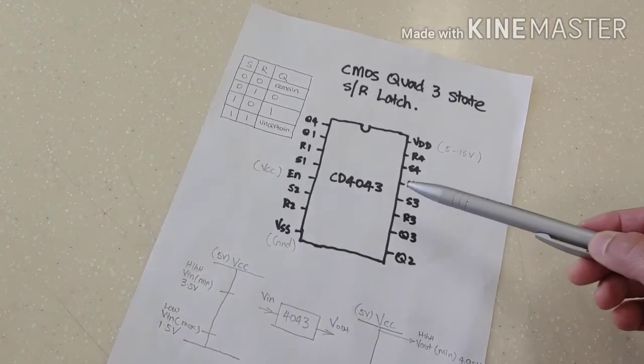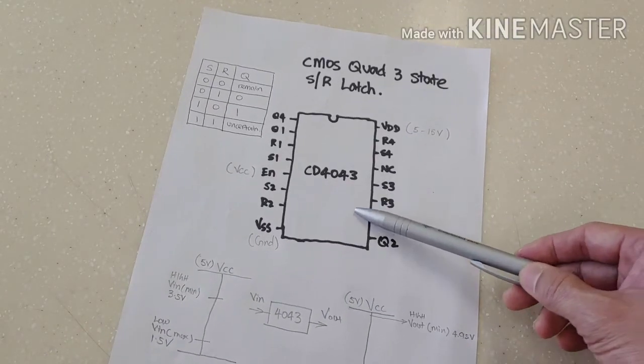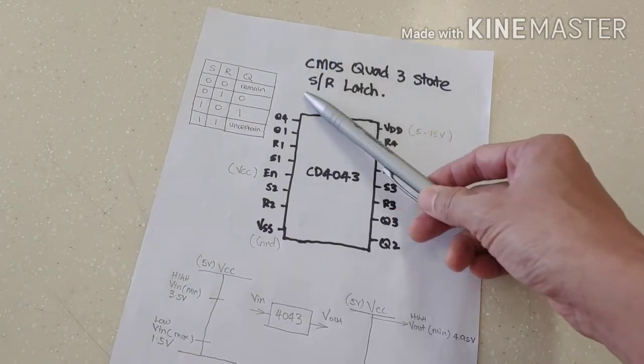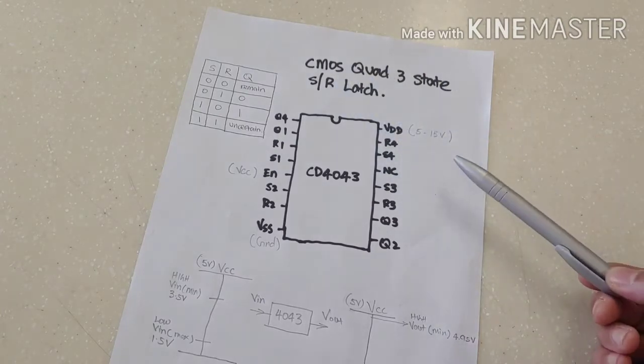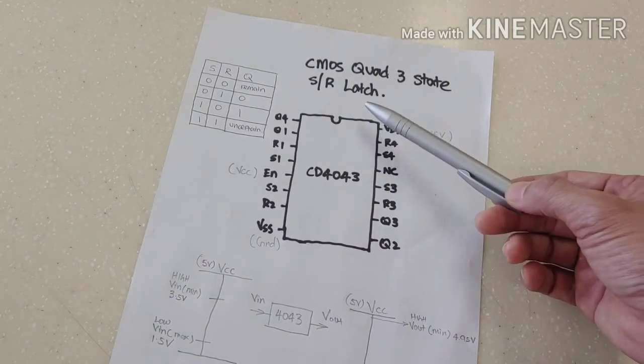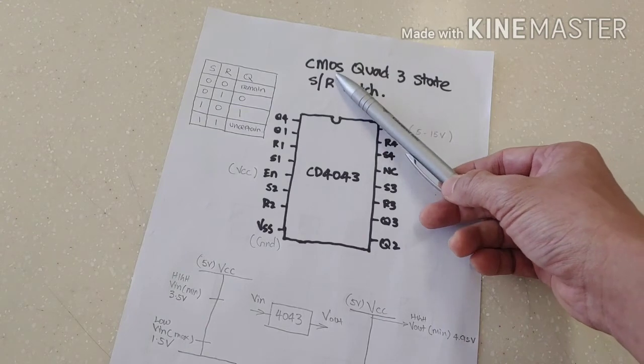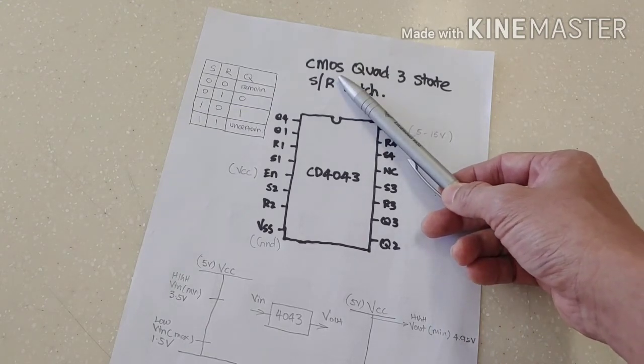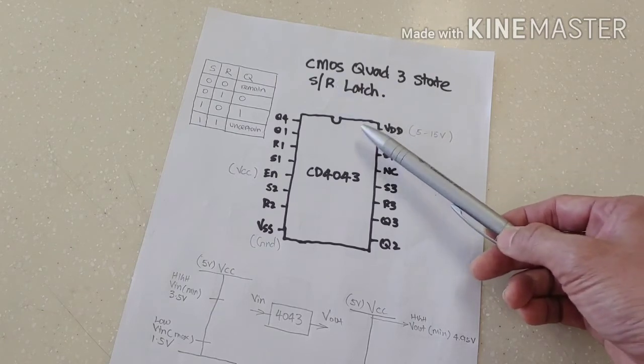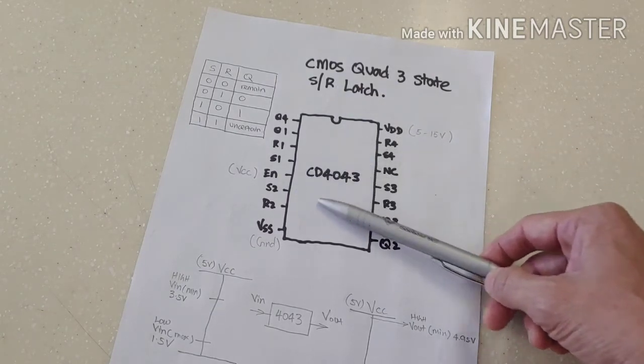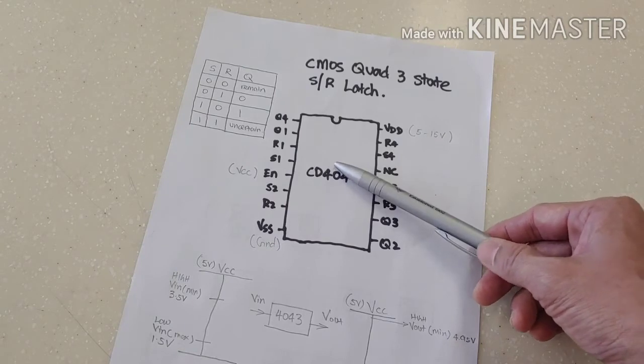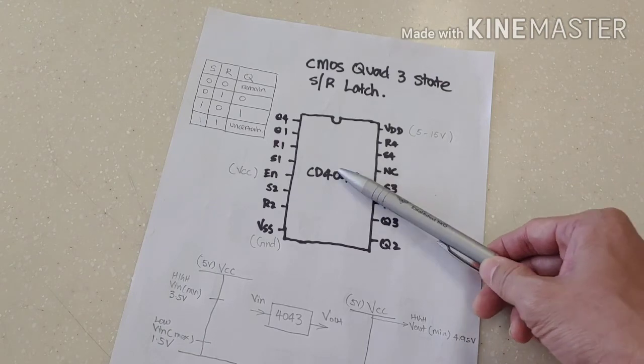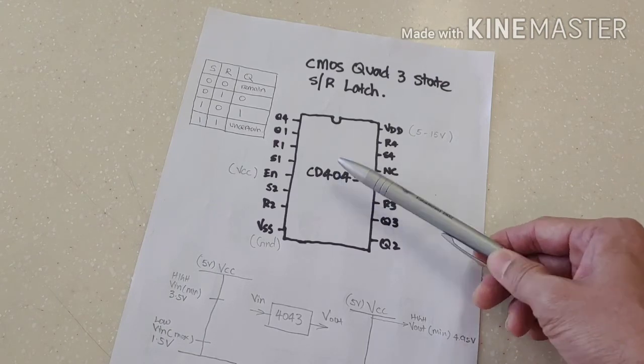This is the introduction about the 4043, and I want to bring your attention back to the CMOS. What this means is that it's different from your TTL that you are used to. This one is very sensitive to static discharges. When you touch it with your bare hands and if you do have static charges on your fingers, it will discharge and it may spoil the chip.